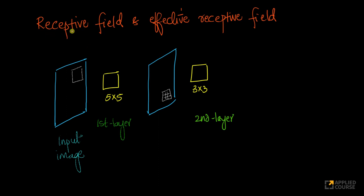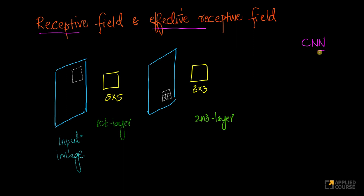This is one of our student queries. He asks: what is a receptive field, and what is the difference between a receptive field and effective receptive field? This is a term we have not used as part of our course videos, but I'll explain it. The concepts behind this are very simple — we've already covered them in the convolutional neural networks chapter in our deep learning module.